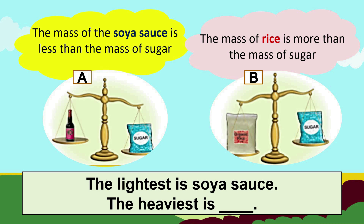The mass of the soya sauce is less than the mass of sugar in Picture A. That means sugar is heavier than the soya sauce. In Picture B, the mass of rice is more than the mass of sugar. That means the rice is heavier than the sugar. So which item is the lightest — the soya sauce, sugar, or the rice? Yes, the lightest is soya sauce and the heaviest is the rice.